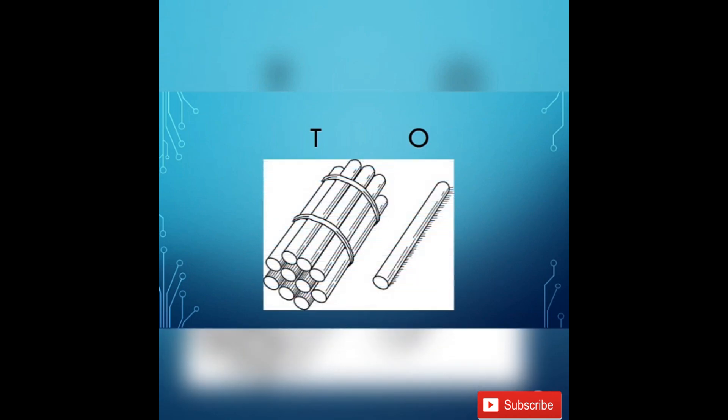Students, here I have 1 ten. And how many remaining? 1 one is remaining. 1 is called 1 ones. 1 ten and 1 one makes 11.